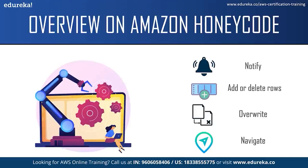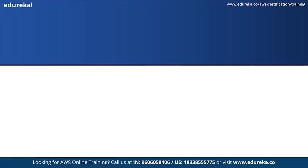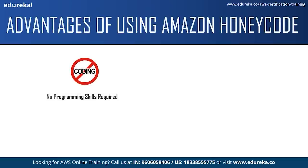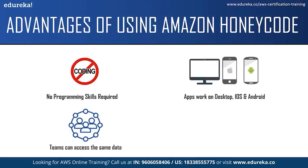Now that you have an overview of Amazon Honeycode, let us see some of the benefits of using Honeycode. One of the main advantages is that no programming knowledge is required to build your application, so anyone can be an app builder. The second advantage is you can build web and mobile applications that work on your desktop browser, iOS, or Android. You can also have a different interface for desktop browser and a different one for your mobile phones. Honeycode applications help teams stay in the loop, as all teammates have access to the same data which can be updated in real time. The app can also be personalized to show data that's relevant to each individual team member.